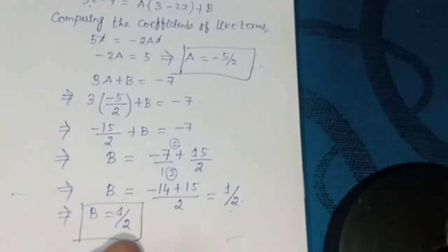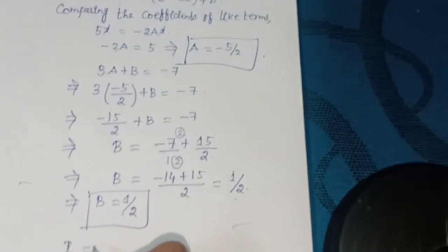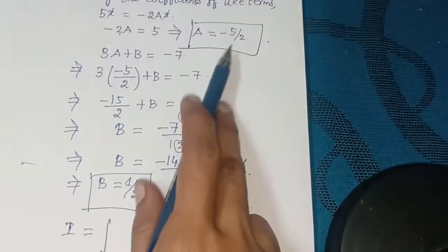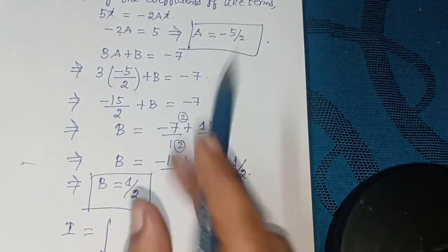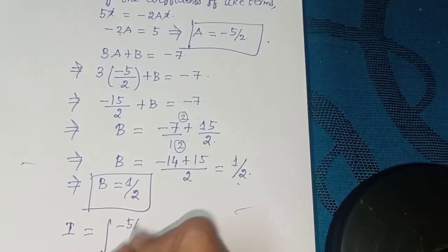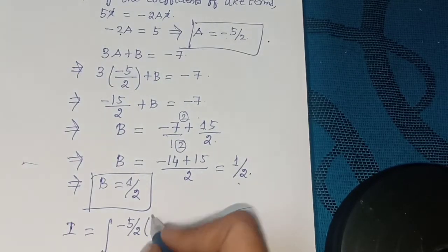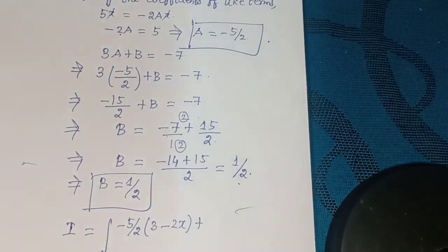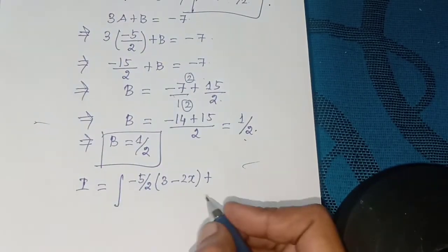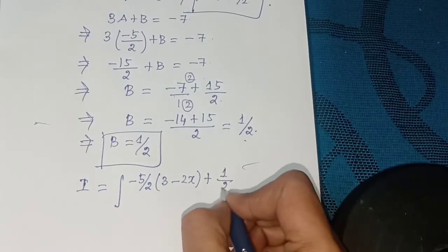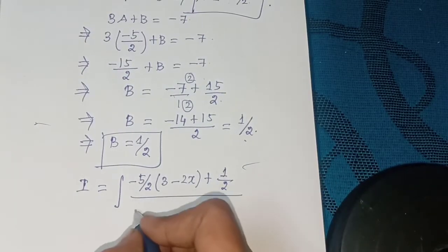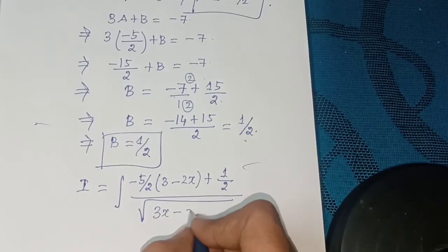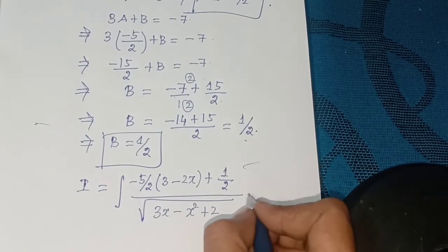Now substitute the values of a and b back. I = ∫ [(-5/2)(3 - 2x) + 1/2] / √(3x - x² + 2) dx.